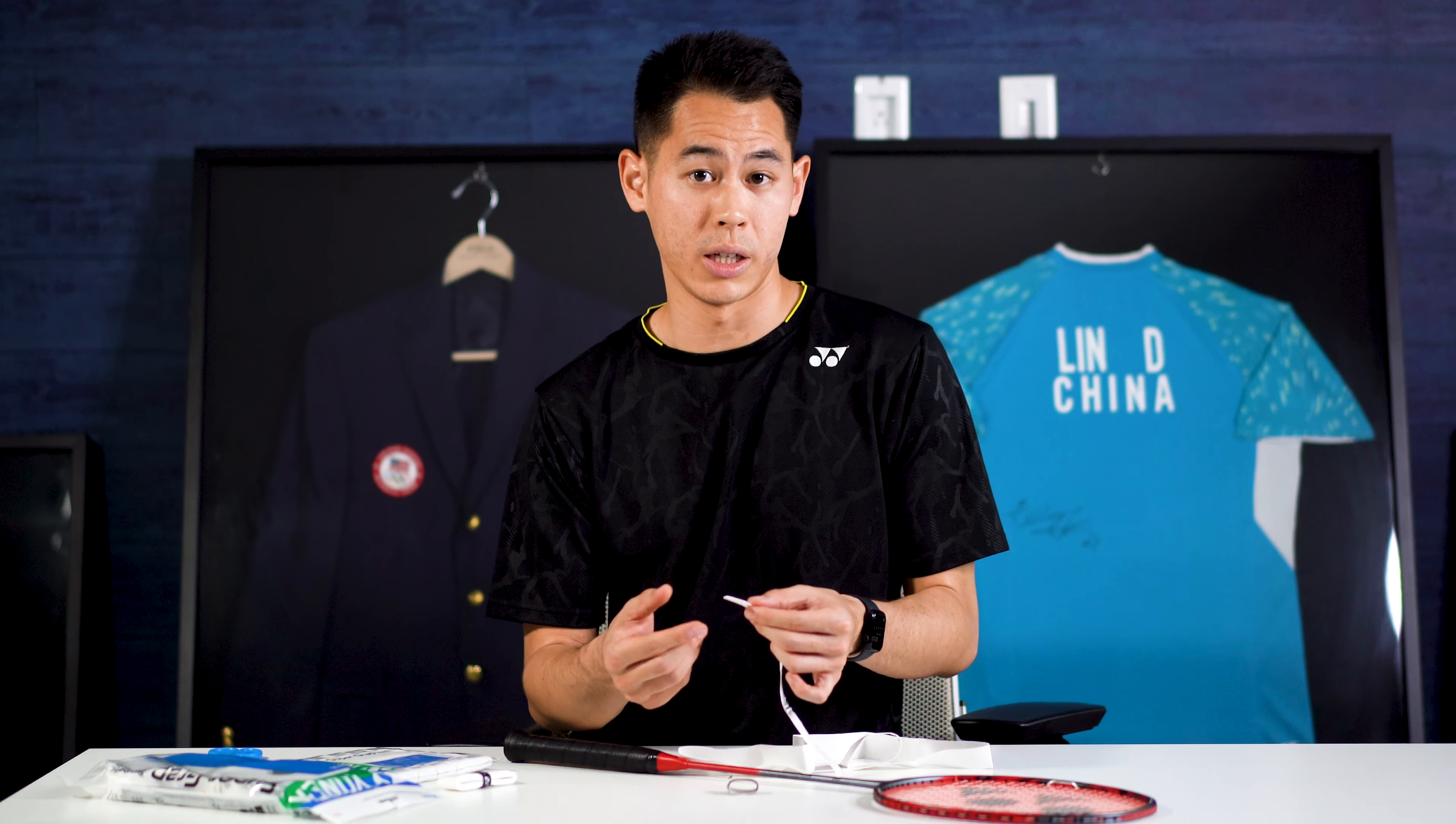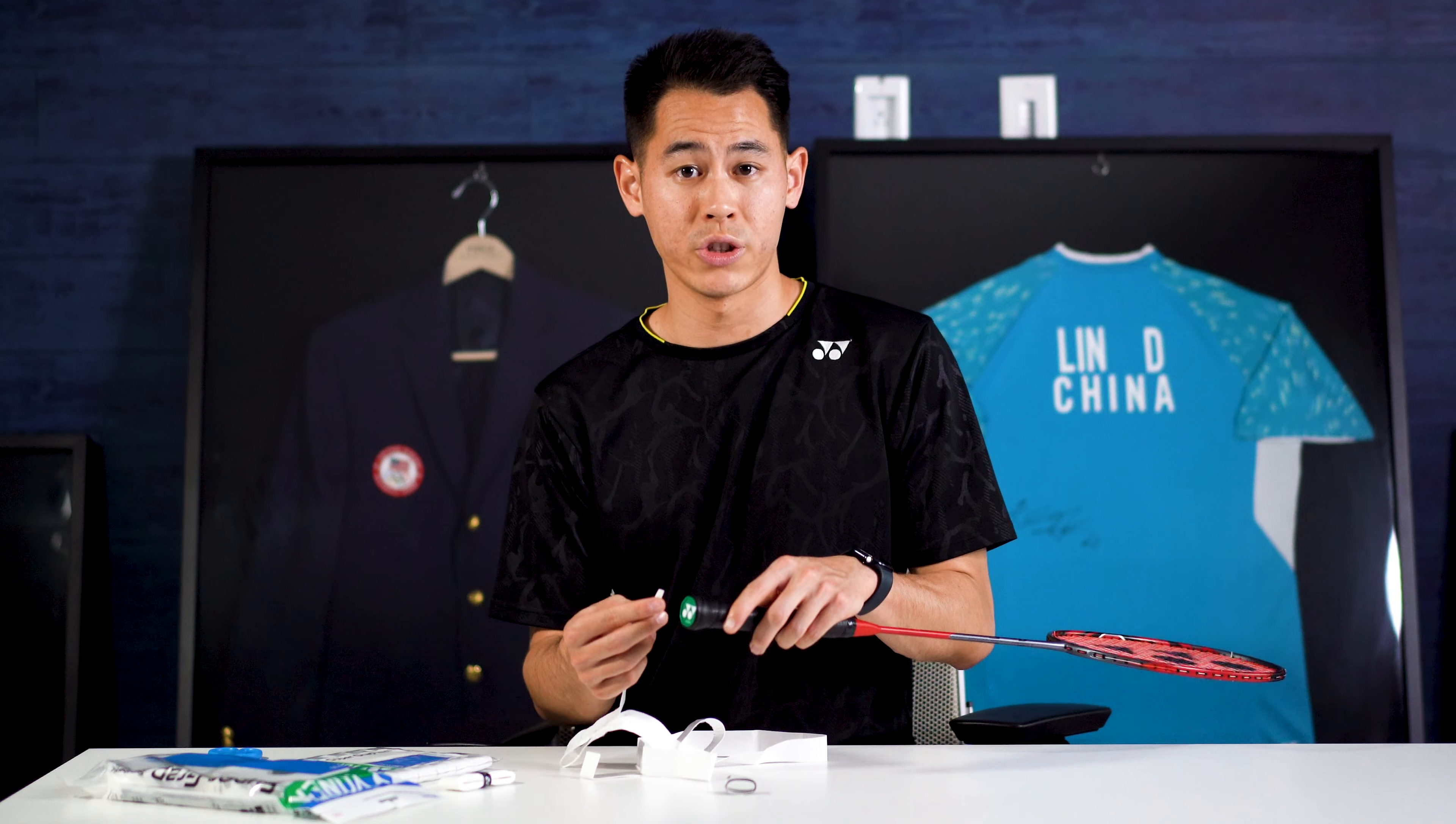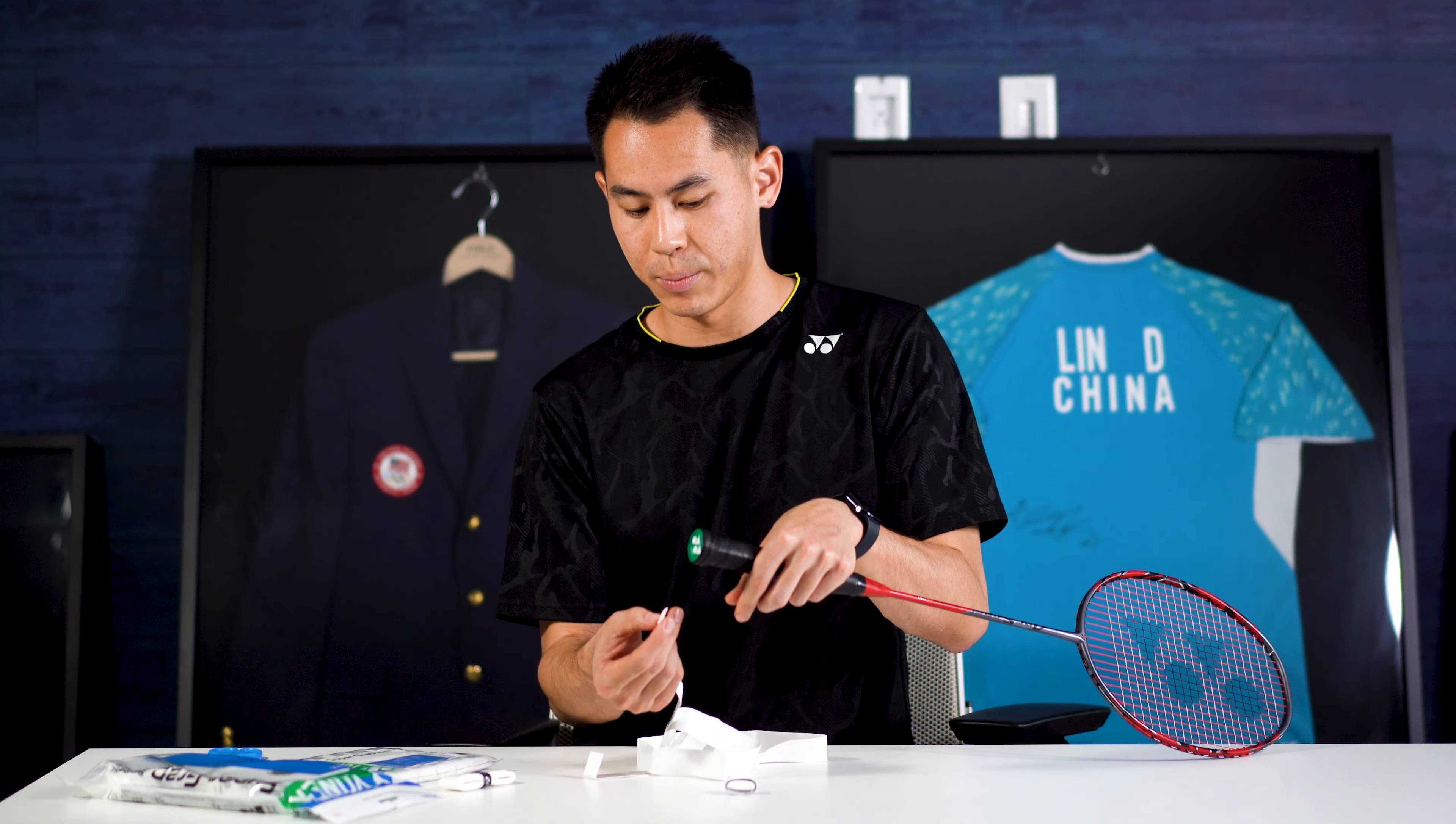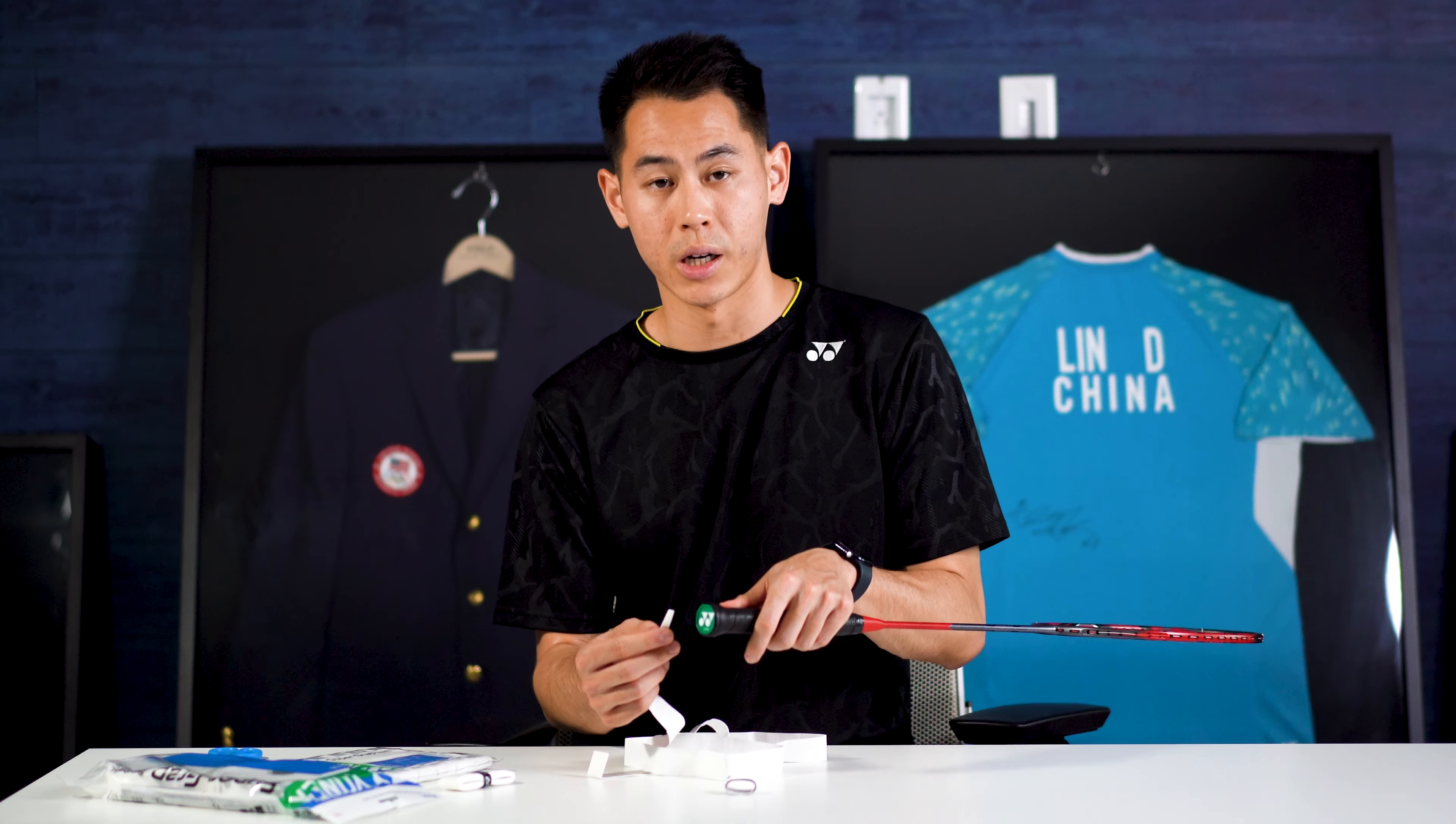You can actually start on either side. Whichever side you start from, we're always going to start from the end of the racket. Now I'm going to start gripping. We're going to start with the edge that's tapered and has the adhesive because that's recommended by Yonex's standard procedure.